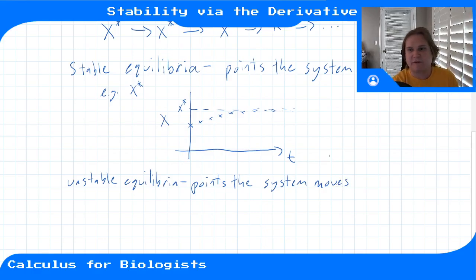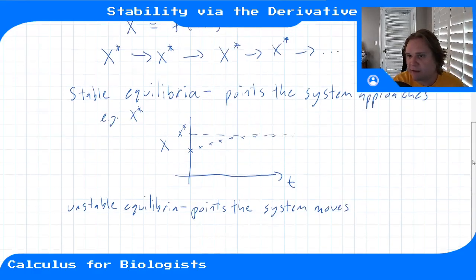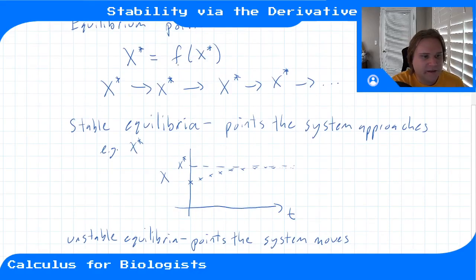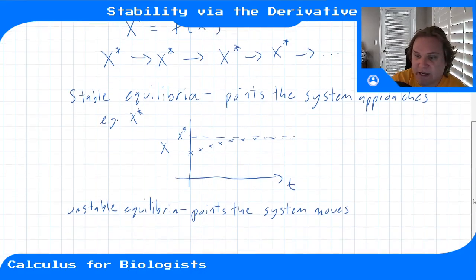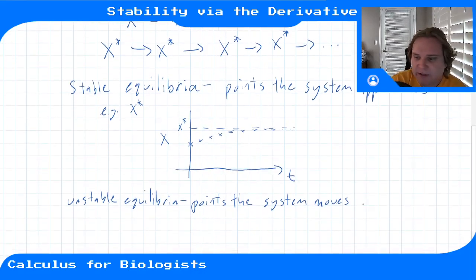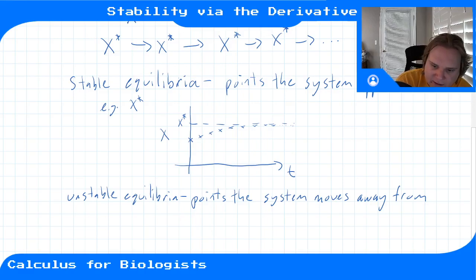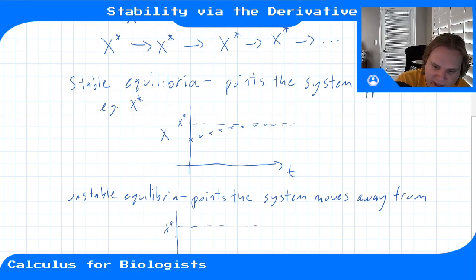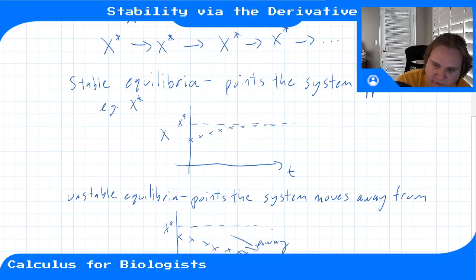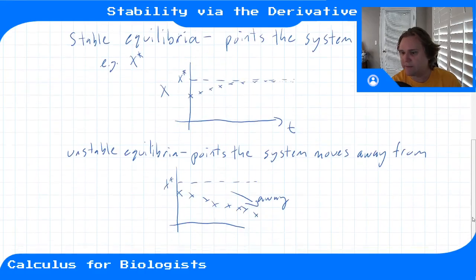Both stable and unstable equilibria must satisfy x* = f(x*), so once you're at one you stay there for all time — stability is just about what nearby trajectories look like. For an unstable equilibrium, if you start nearby you move away from it.